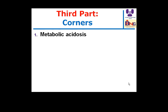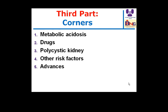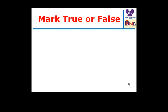Then, an example of a drug and its implication in the process of CKD progression. I'm not going to discuss many drugs, but just a sample for the relationship of drugs and chronic kidney disease. Then some slides about the progression of polycystic kidney disease, other risk factors, and some advances and ideas for basic research in the future. At the end, I'll conclude this workshop with final statements. Let us start with some questions.